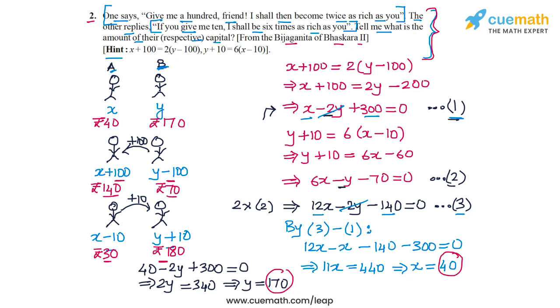So our answer is correct. A's capital is Rs. 40 and B's capital is Rs. 170.